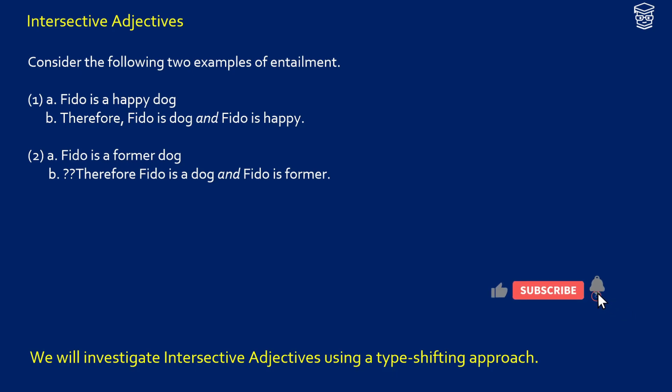In the first example, we have Fido is a happy dog. The adjective here is happy. Now what we can get from this entailment is that Fido is a dog and Fido is happy. So basically, if we have this form, an adjective plus a noun with this happy adjective, we get the fact that they're an adjective and they're a noun.